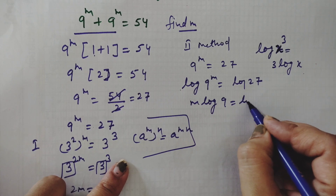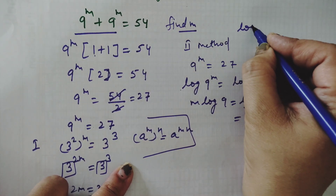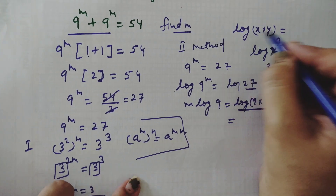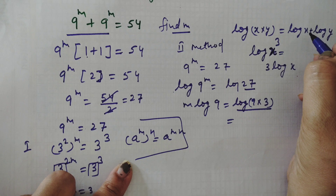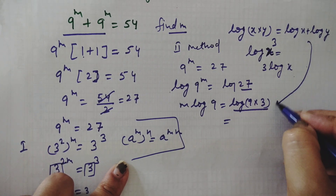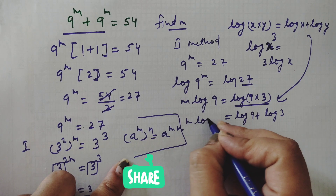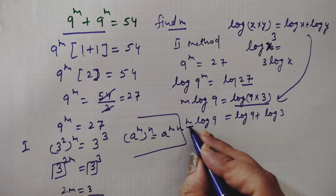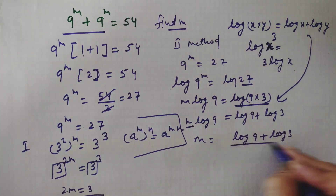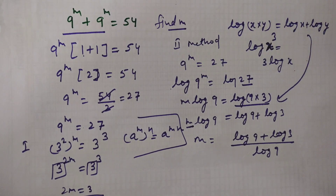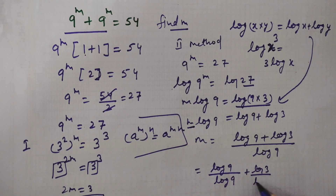We can write log 27 as log(9 times 3), and using the log product rule — log(x times y) equals log x plus log y — this becomes log 9 plus log 3. So m equals (log 9 plus log 3) divided by log 9, which simplifies to log 9 over log 9 plus log 3 over log 9.